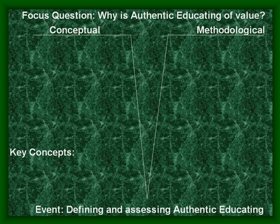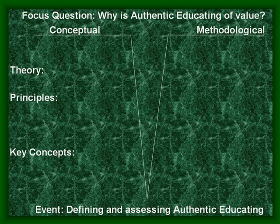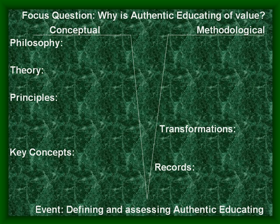The key concepts in this V-Diagram are related to authentic educating and help define the event of authentic educating. Key concepts, when related together, establish principles. Several principles form a theory, and a theory gives support for a philosophic perspective. On the right-hand side of the V, records establish empirical evidence for the conceptual framework. Evidence gathered as data is transformed or summarized to give support for the concepts, principles, theories, and philosophy of a particular perspective.